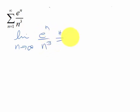So I can apply L'Hopital's rule and have the limit as n goes to infinity of e to the n over 3n squared, and you can probably see what's going to happen here. The numerator is going to stay e to the n.